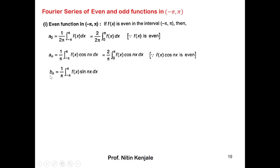Whereas bₙ, whose expression is 1 over pi times the integral of f(x) sin(nx) dx from minus pi to pi, will be equal to 0. This is because f(x) is an even function and sin(nx) is an odd function, so their product is an odd function. The integral of an odd function over the limits minus a to a is equal to 0.